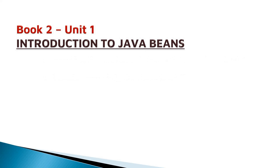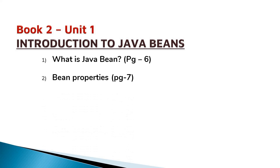Now coming to Book 2 Unit 1, that is Introduction to Java Beans. You should know what is Java Beans and why we use it — go through page 6. Next, you should know what are the bean properties, available on page number 7. Next comes Enterprise Java Beans, in short called EJB — go through page number 9, it is a very important topic.